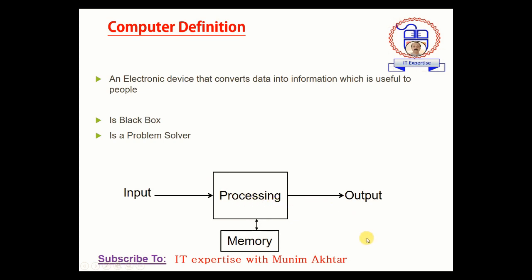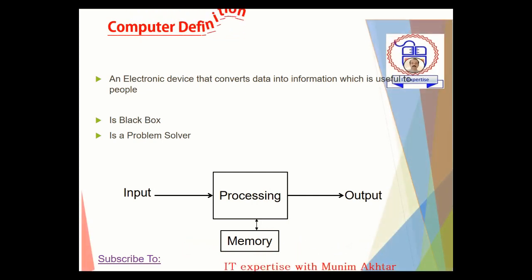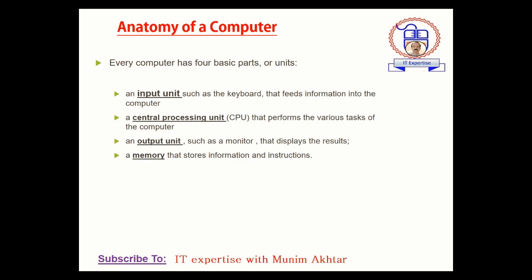The memory is normally used to process the data, as well as to store the data permanently or temporarily. After that, your data will show on the screen. This is all about the black box of the computers. Now let's discuss the anatomy of the computers.